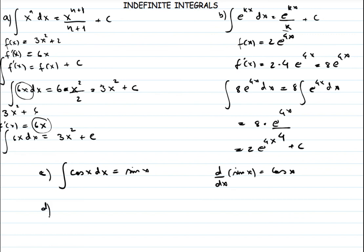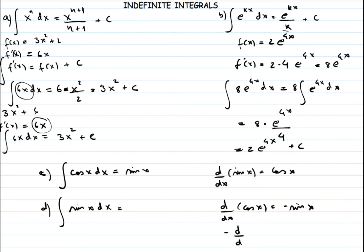We also have the fourth rule: the integral of sin(x) dx. The question is how can we get to sin(x) using derivatives? If you find the derivative of cos(x), it gives minus sin(x). So sin(x) did not come directly from cos(x). However, if you take the negative derivative of cos(x), you get sin(x). Therefore, the integral of sin(x) equals minus cos(x) plus c, because we are dealing with indefinite integrals.